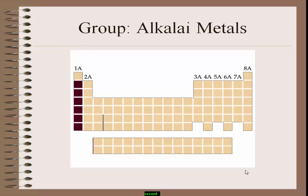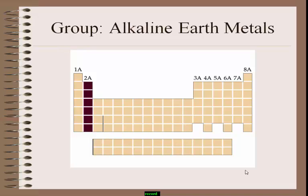Group 1 elements are marked here — these belong to alkali metals. Group 1 elements are called alkali metals. Group 2 elements are called alkaline earth metals, marked in black color. Group 1 and group 2 elements are called S block elements.